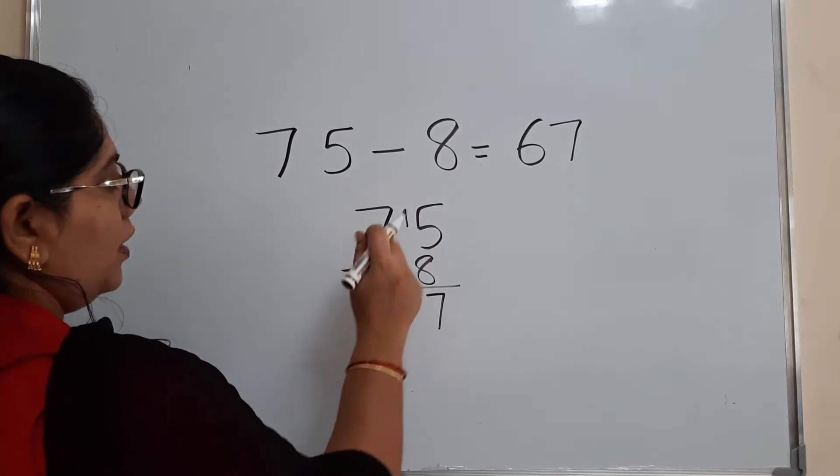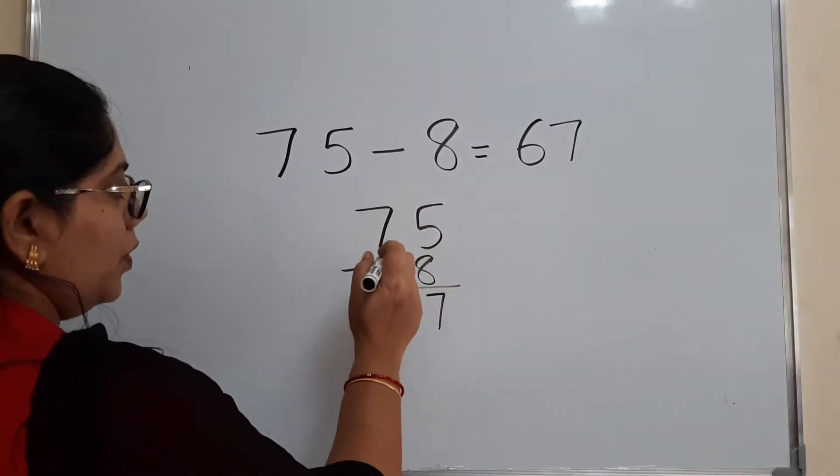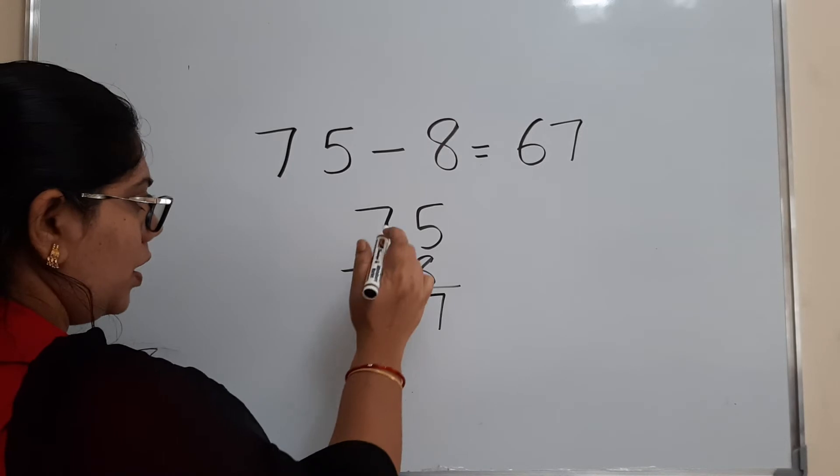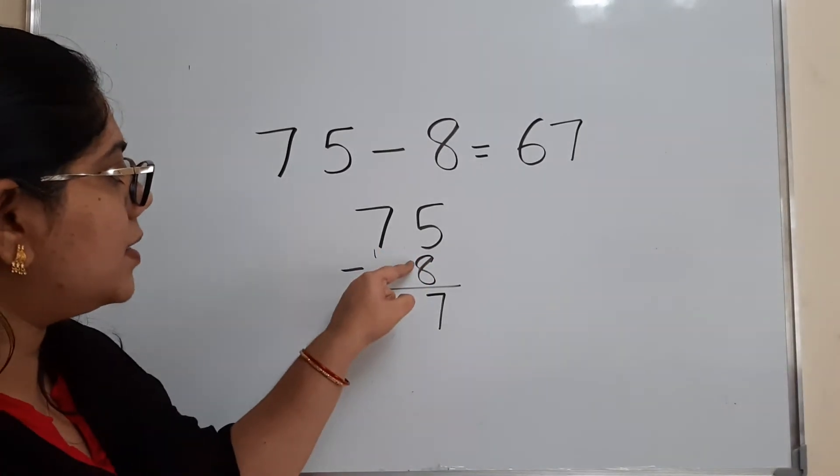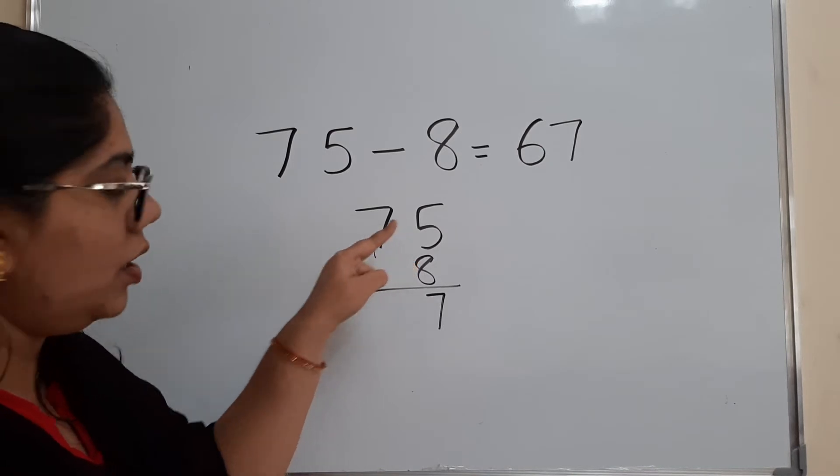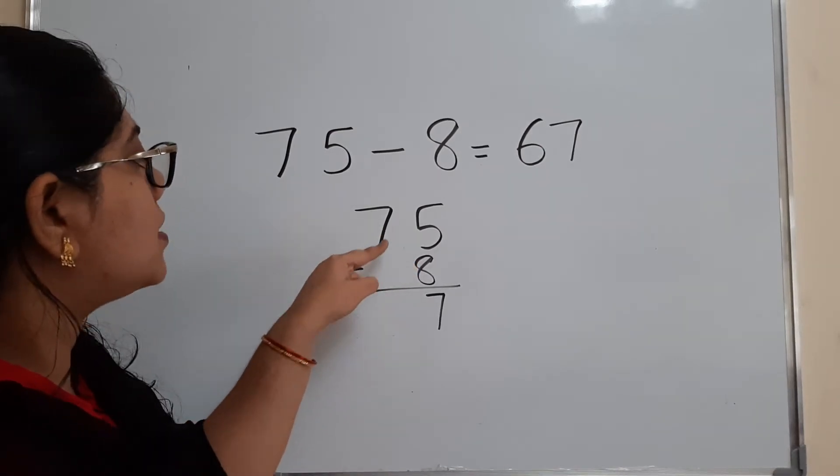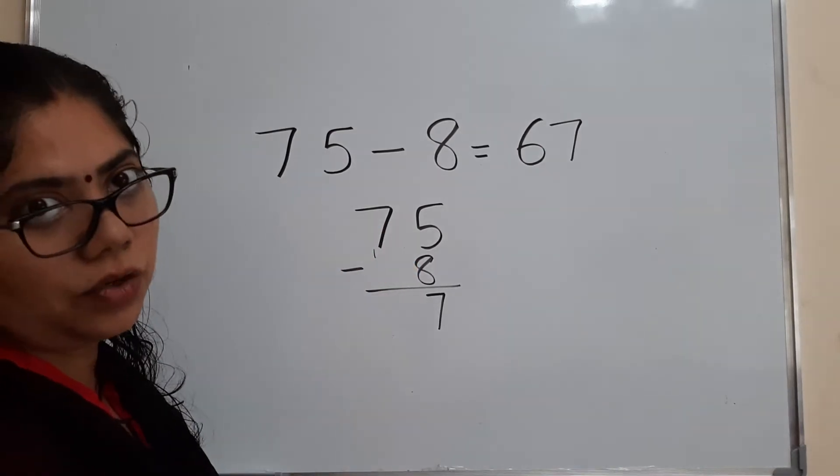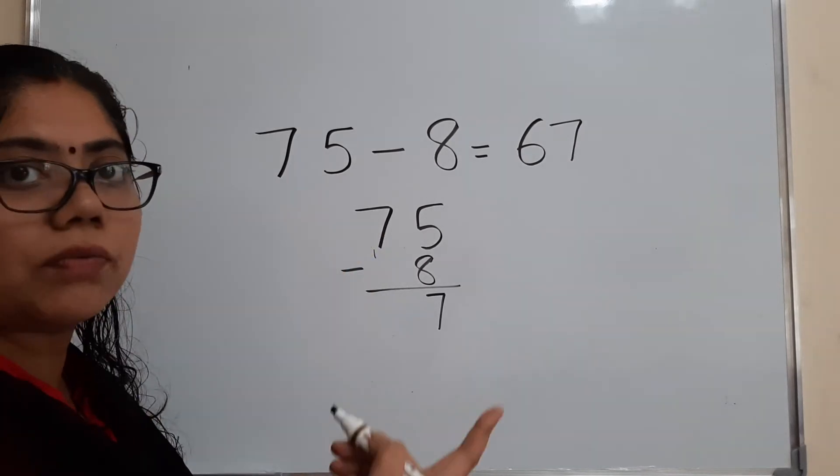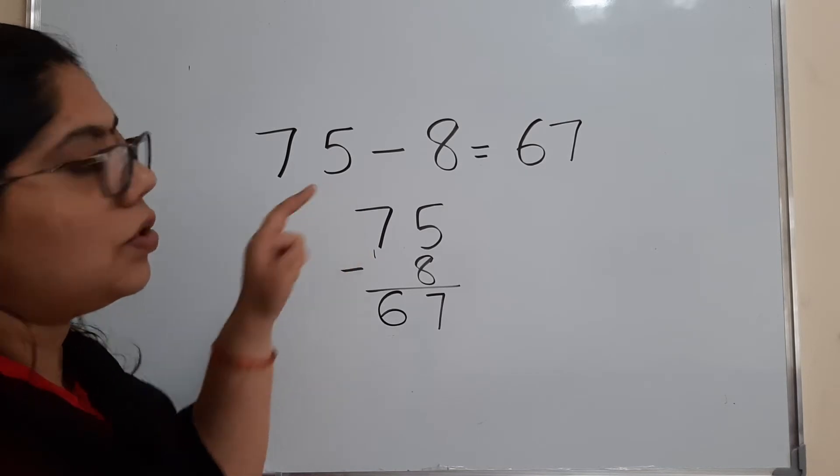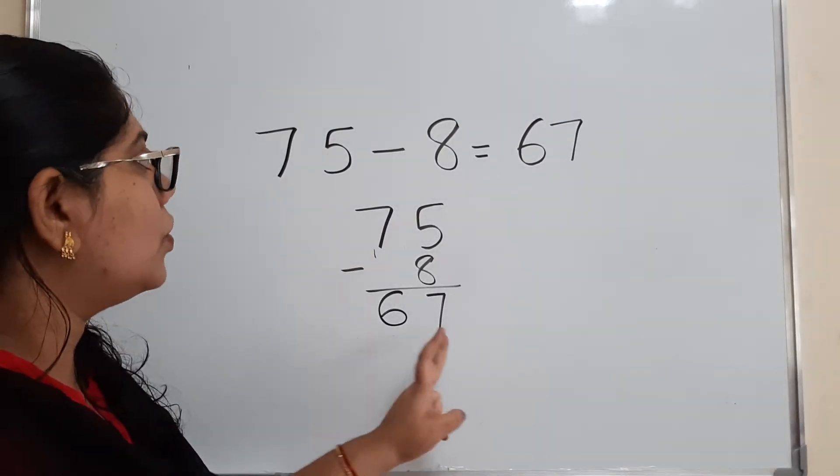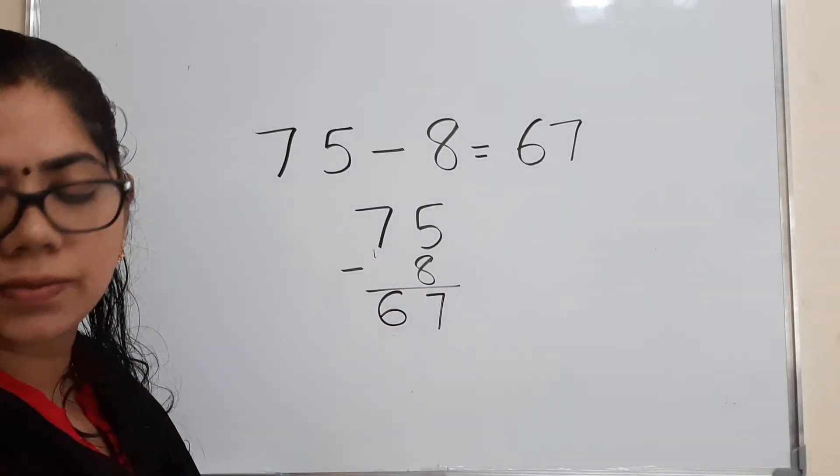This one you want to actually put here, or in the small, like the small here. So 7 plus 8 is 15. Then 1 plus something, you will get 7. 1 plus what will give you 7? 1 plus 6. So 1 plus 6, you will get 7. So you got the same answer. See.